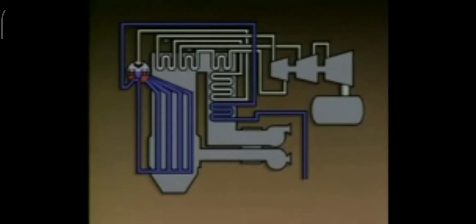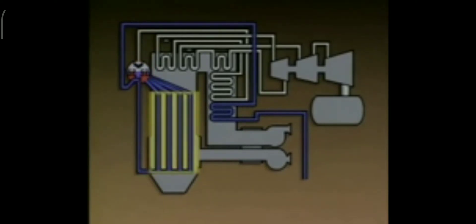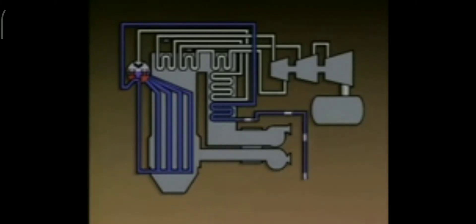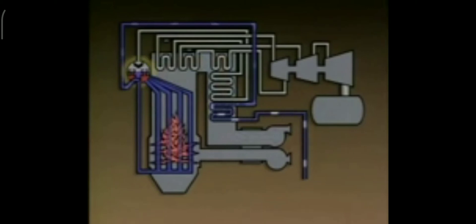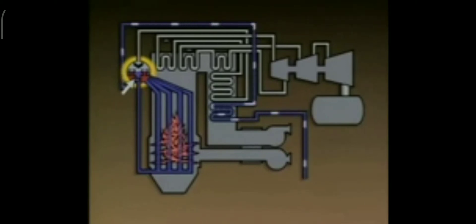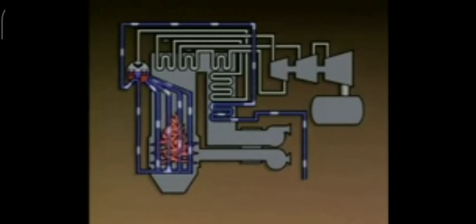The water flow path includes an economizer, the boiler drum, downcomers, headers, and the boiler tubes. The water supplied to a boiler is called feed water. The first component that the feed water passes through is the economizer. The economizer uses heat from combustion gases that would otherwise flow out of the stack to heat the feed water. Heating the feed water means that less fuel has to be burned in the furnace to convert the water into steam. In this boiler, the heated feed water flows from the economizer and enters the bottom part of the boiler drum through the feed water inlet. The water continually circulates within the boiler through the downcomers, the lower headers, and the boiler tubes.